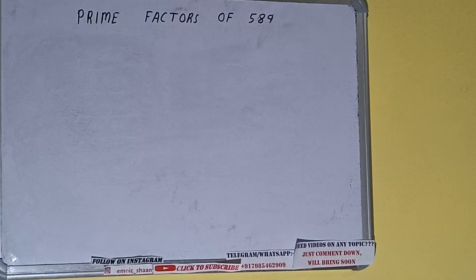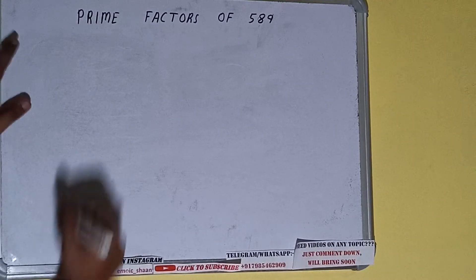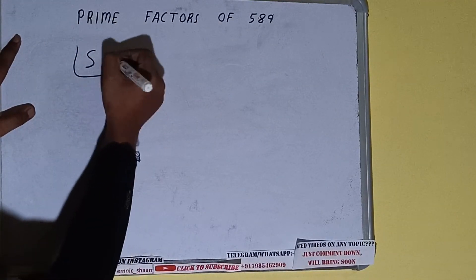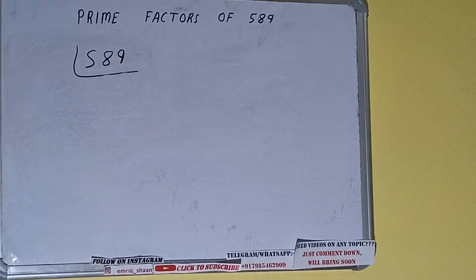Hello friends, and in this video I'll be helping you with the prime factors of the number 589. So let's start. First of all, we need to write the number like this. The next thing we need to know about is what are prime numbers. Prime numbers are numbers that are divisible by 1 and the number itself, like 2, 3, 5, 7, and so on.